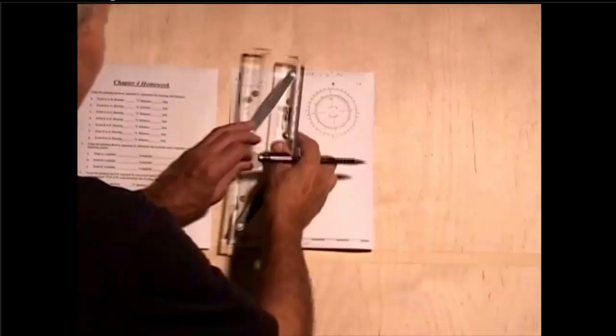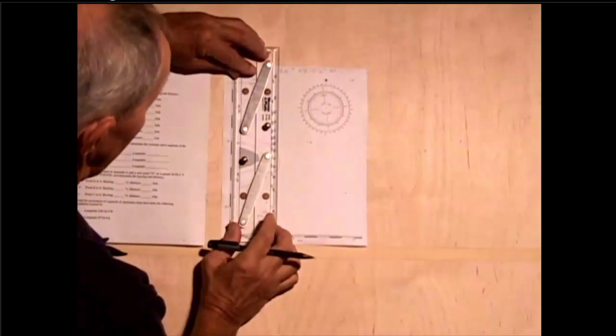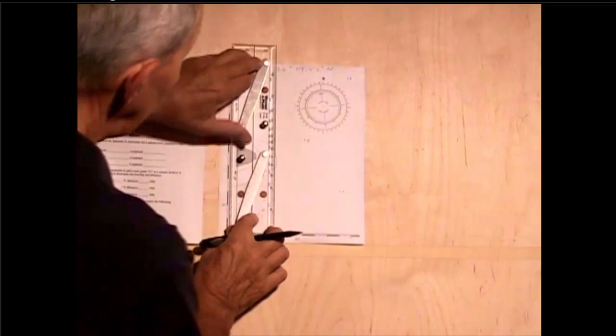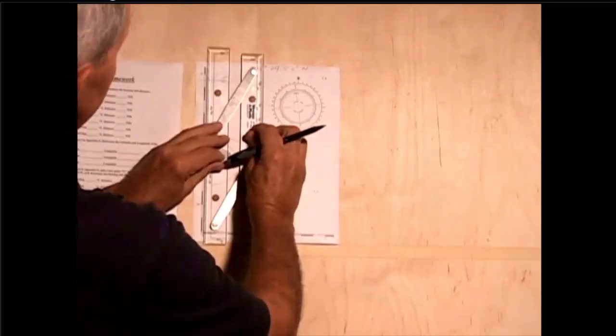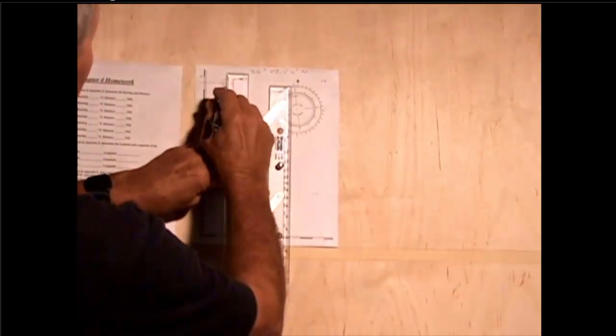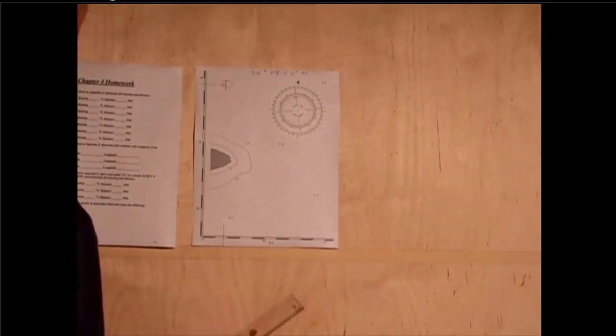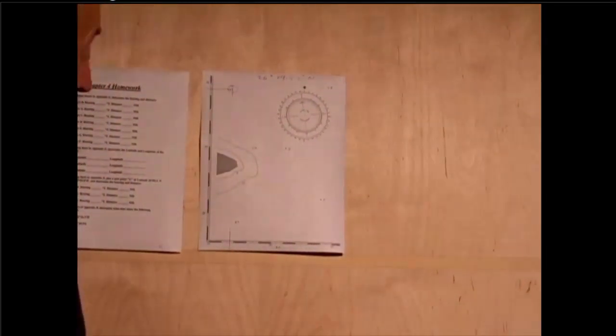To do the longitude, we'll do a similar thing. We'll put the scale vertically on this vertical scale to get it nice and parallel. So, we go through this A again,